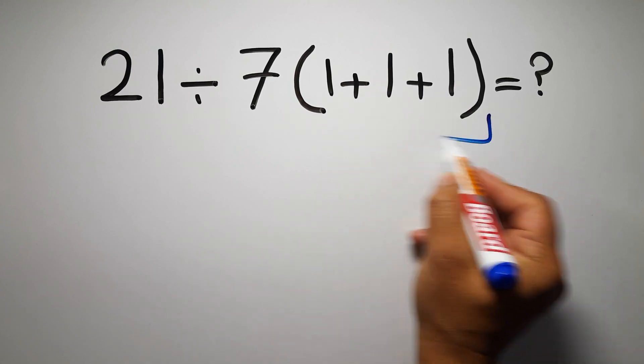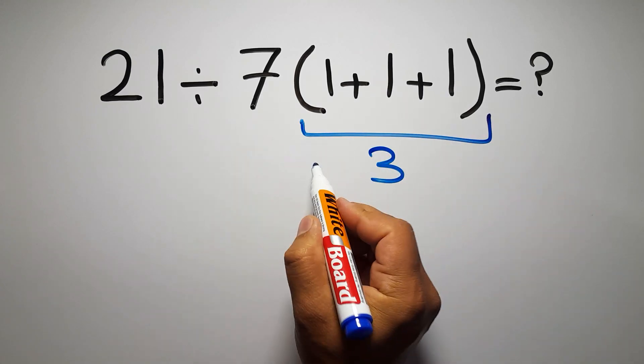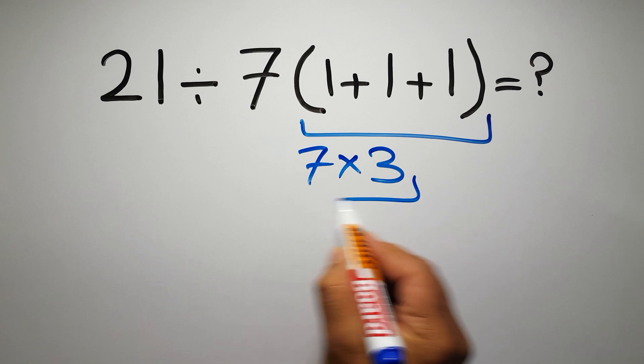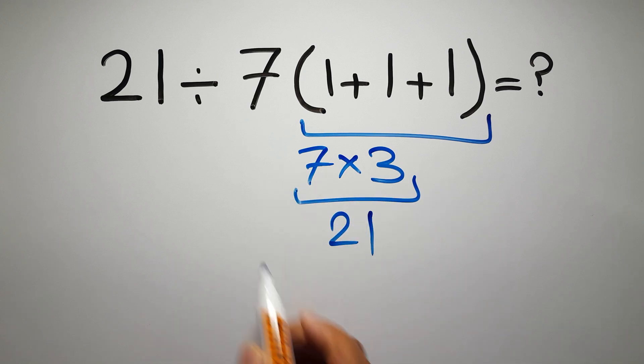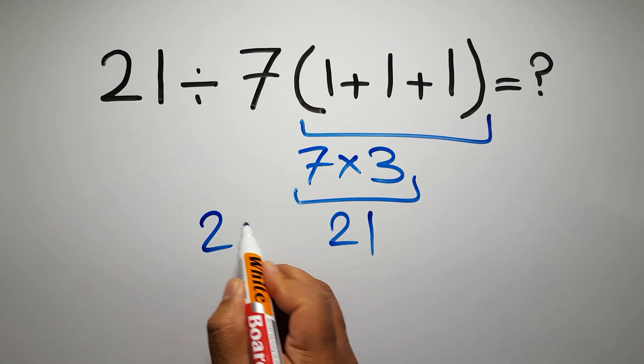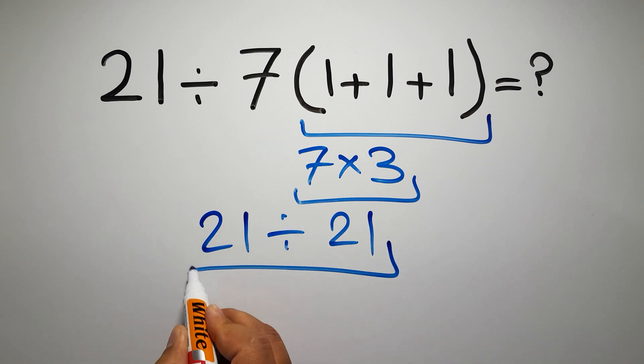1 plus 1 plus 1 gives us 3, and 7 times 3 is just 21, so 21 divided by this, 21 divided by 21 is just 1, but this answer is not correct.